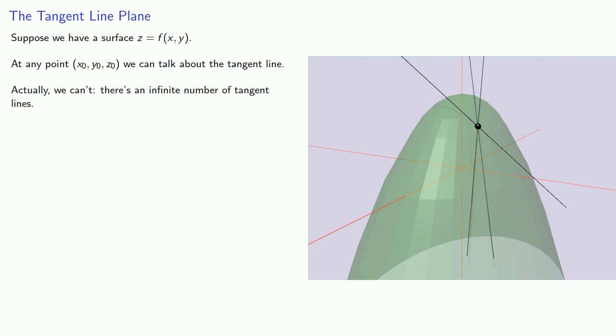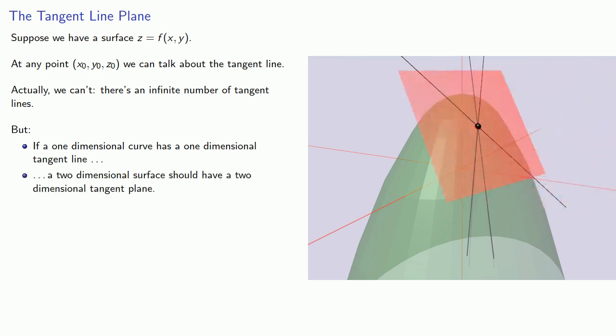There's an infinite number of tangent lines. But let's think about this. If a one-dimensional curve has a one-dimensional tangent line, then we should expect that a two-dimensional surface should have a two-dimensional tangent plane. And so the question you've got to ask yourself is, how do we find it?